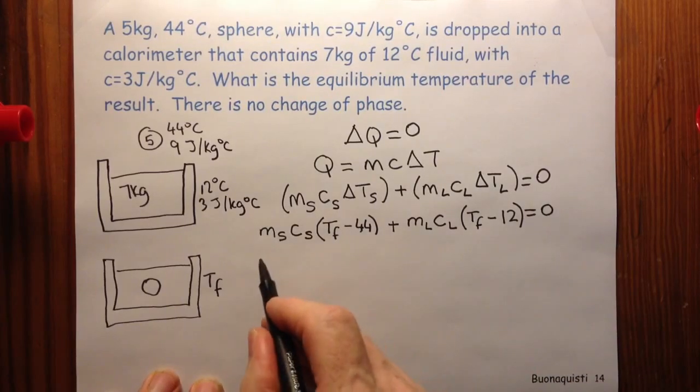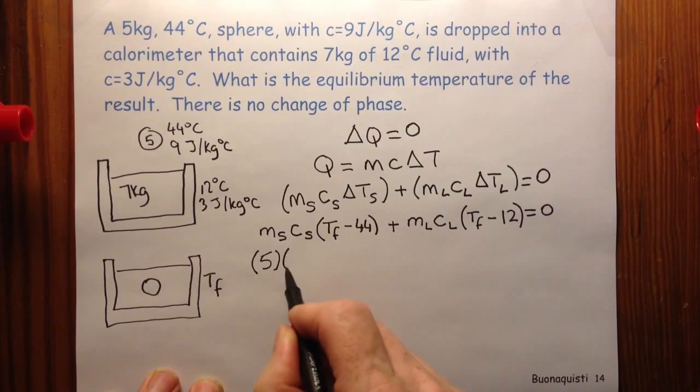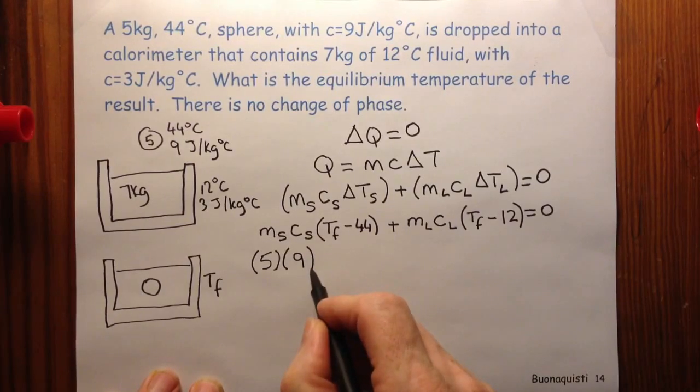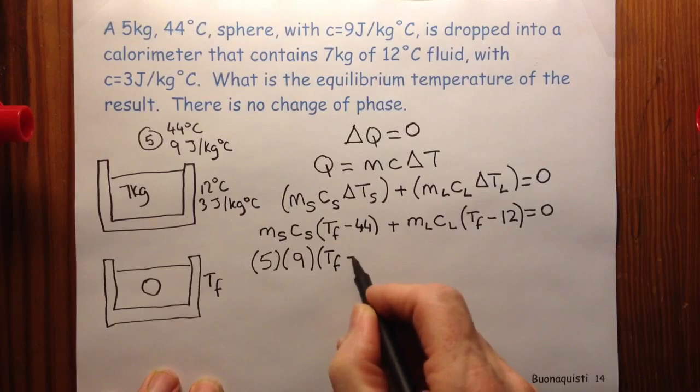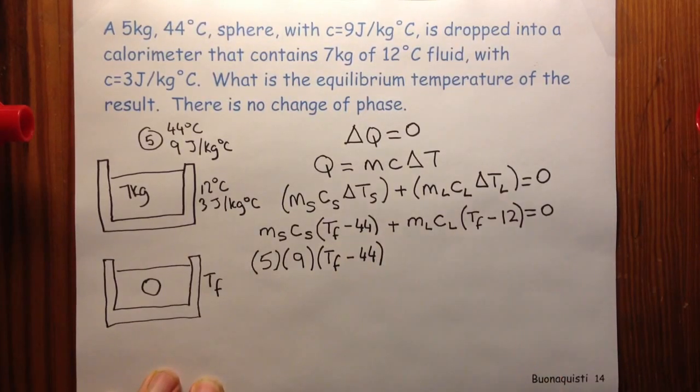Let's put some more numbers in. The mass of the solid was 5. The specific heat of the solid was 9. The Tf is what I want to find. And the temperature of the solid to begin with was 44.